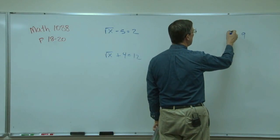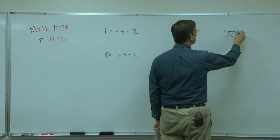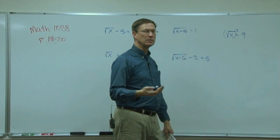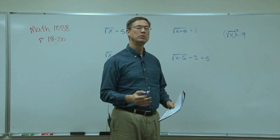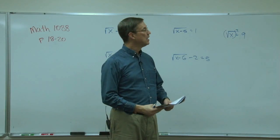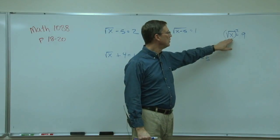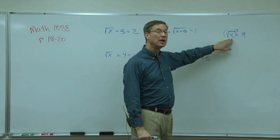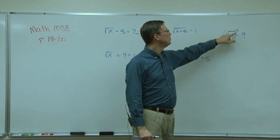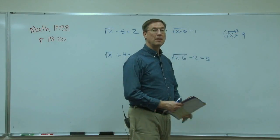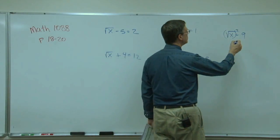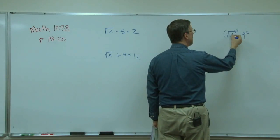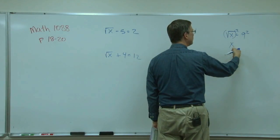Let me show you a shortcut. Basically what we're saying to get rid of a radical is I want to square it. That's the opposite. We're trying to undo multiplication, we do division. We're trying to undo subtraction, we do addition. If I want to undo the square root of x, I have to square it, but I have to do the same thing to the other side of the equation as well, so I'm going to square the 9.